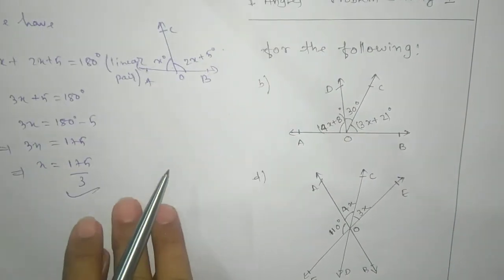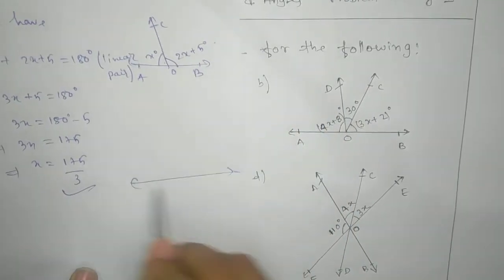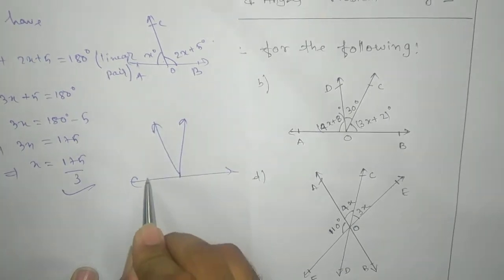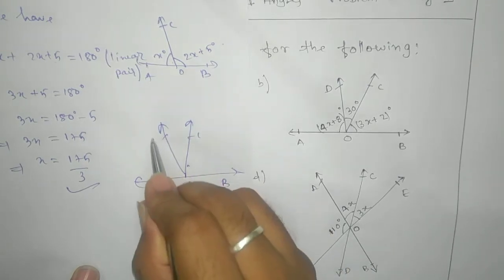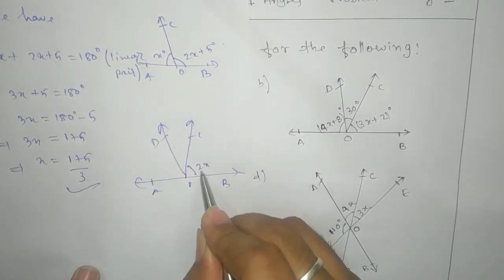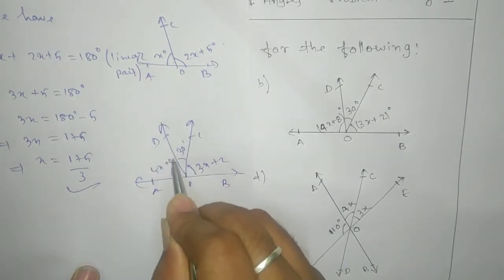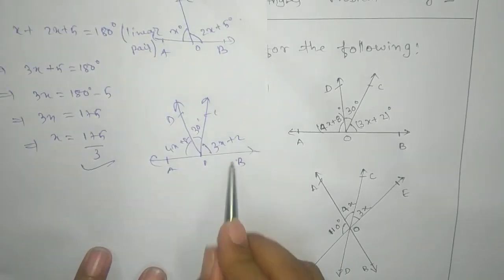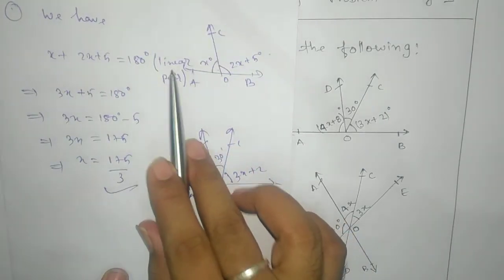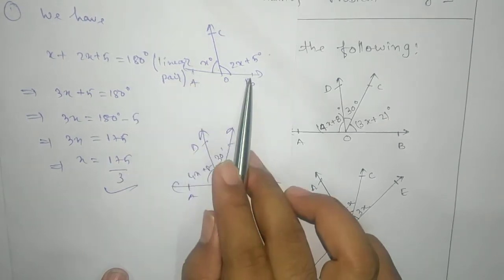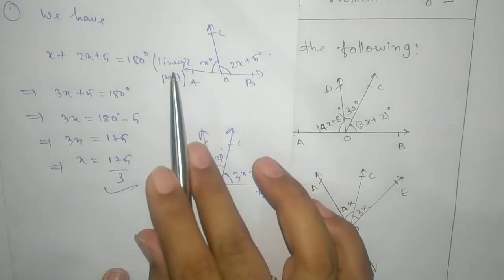Next, proceed to the second one. Here AOB is a straight line and we have C and D, where the angles are 2X, 3X plus 2, 30, and 4X plus 8. You can see this is a straight line. In the first case we are taking linear pair — pair means two angles on a straight line, so we write linear pair.